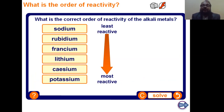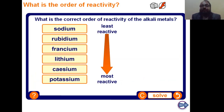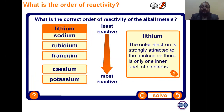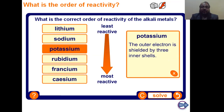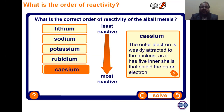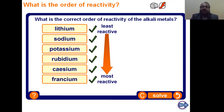These are the alkali elements arranged in reactivity order from least reactive at the top to most reactive at the bottom: lithium is the least reactive, then sodium, then potassium, then rubidium, then cesium, and francium is the most reactive.